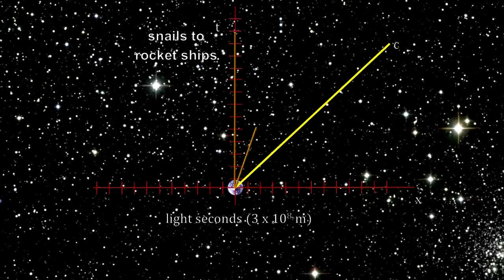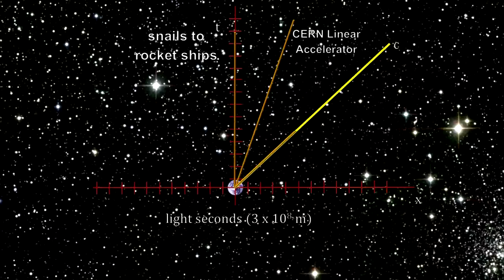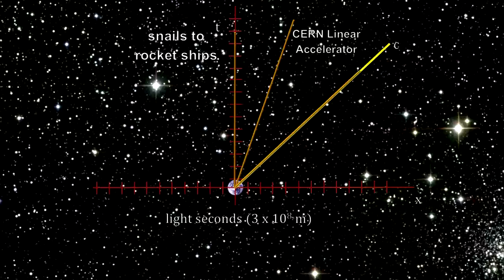Here is the line for protons at the end of the Large Hadron Collider's linear accelerator traveling at one-third the speed of light. And at this scale, the line for protons in the LHC itself is indistinguishable from the speed of light.